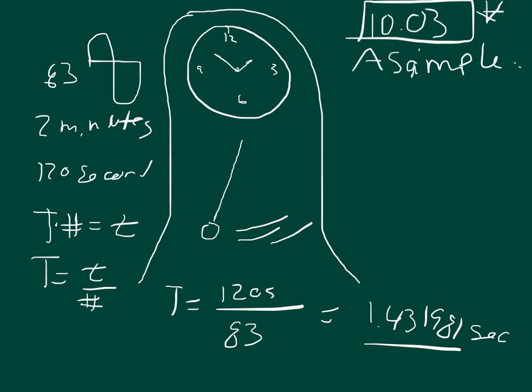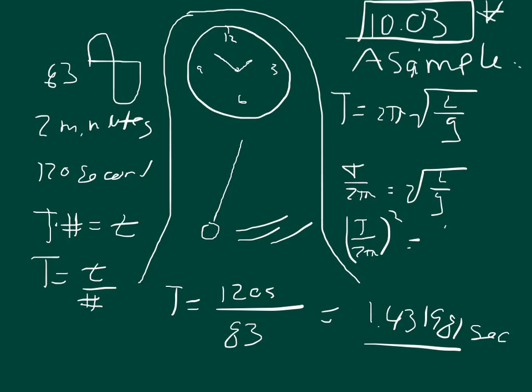Then it says to find the value of G where the pendulum is located. So we know that T is equal to 2π times the square root of L over G. We want to solve for G, so we have to take T over 2π, T over 2π equals the square root of L over G. And then we can take both sides and square them. So T over 2π quantity squared equals L over G.